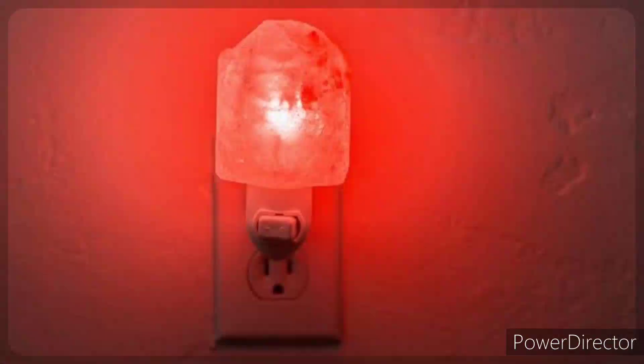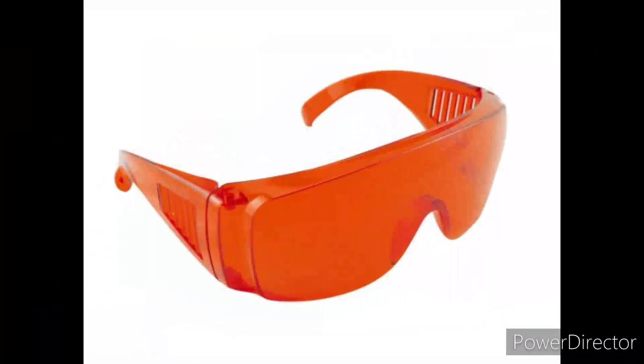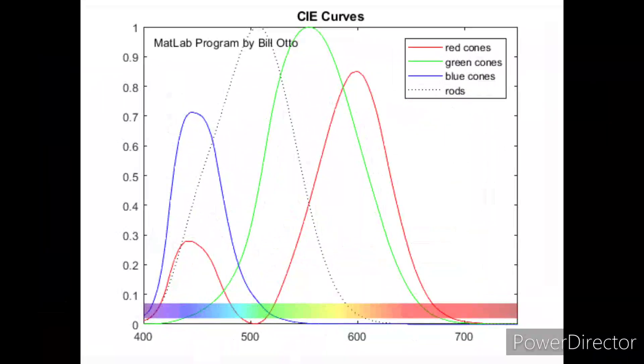By using red lights or wearing red goggles, the cones can receive enough light to provide photopic vision, namely the high-activity vision required for reading. The rods are not saturated by the bright red light because they are not sensitive to long-wavelength light, so the crew members remain dark-adapted.